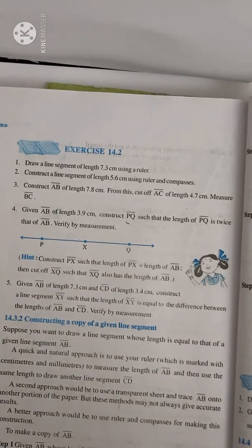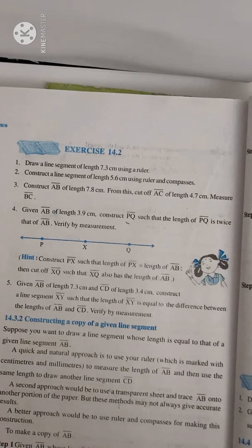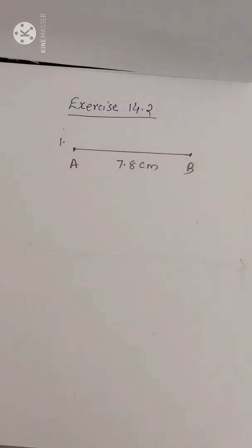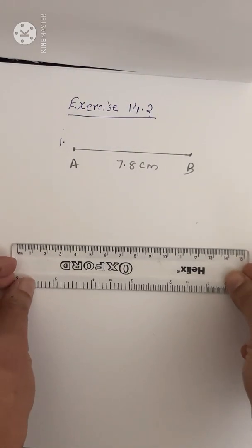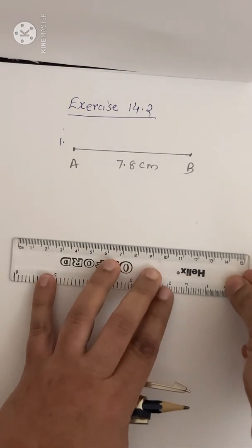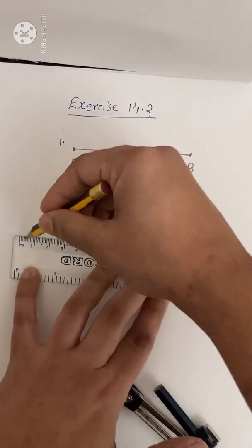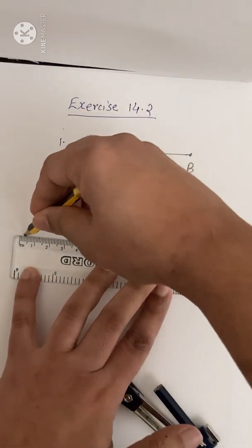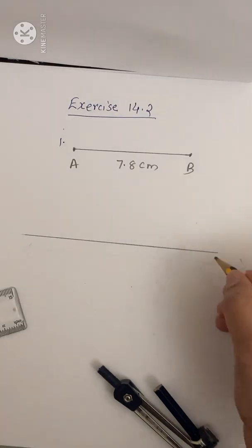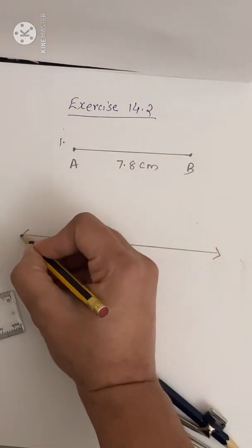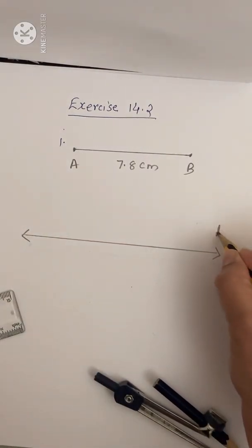Now let's move to question number 2: Construct a line segment of length 5.6 cm using ruler and compasses. So here first you have to draw a line. A line means it has no endpoints. So take your ruler and draw a line — it has no endpoints. Mark two arrows like this and let your line be L.